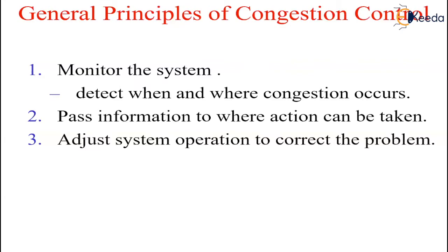In contrast, closed loop solutions are based on the concept of a feedback loop. This approach has three parts when applied to congestion control. The first is to monitor the system to detect when and where congestion occurs. Second is to pass this information to places where action can be taken. Third, adjust system operation to correct the problem. A variety of metrics can be used to monitor the subnet for congestion. Main among these are the percentage of all packets discarded for lack of buffer space, the average queue length, the number of packets that time out and are retransmitted, the average packet delay and the standard deviation of packet delay. In all these cases, rising numbers indicate growing congestion.